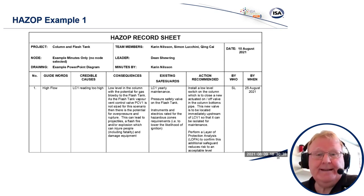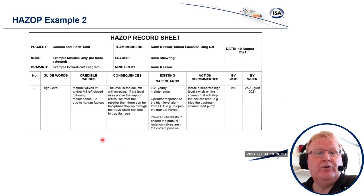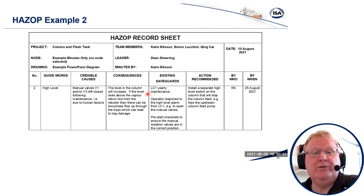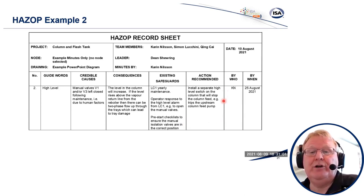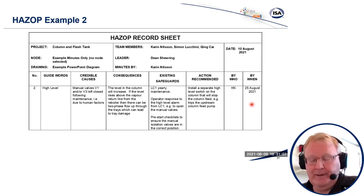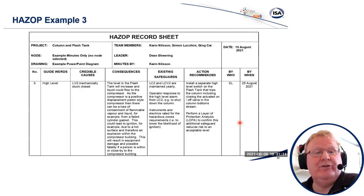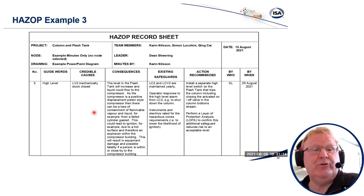The other two scenarios are recorded the same way. For scenario two — the human error of leaving manual valves closed — working through the pyramid: intermediate consequences lead to liquid above the vapour return line, with the ultimate consequential impact being damage to the trays. Safeguards: yearly maintenance, operator response to alarm, and pre-start checklist. The team agreed within 10 minutes to install a separate high-level switch on the column to trip the feed. For scenario three — the mechanical failure — LCV2 stuck closed led to level increase in the flash tank, liquid carry-over to the positive displacement compressor, loss of containment, and potential for a confined explosion with risk of fatality. A high-level switch on the flash tank and a LOPA study were the actions.